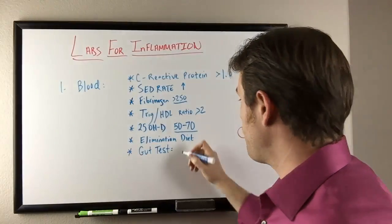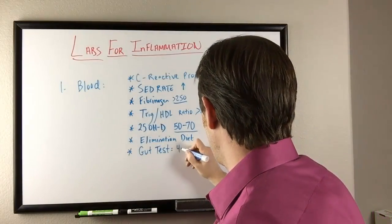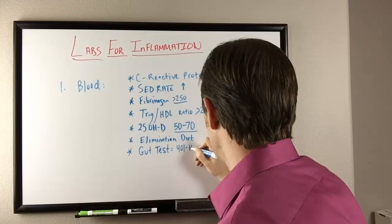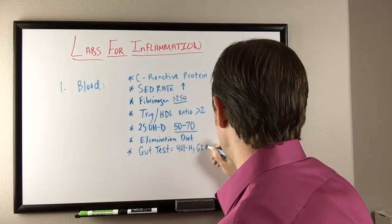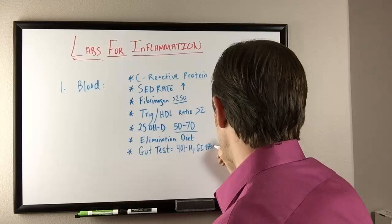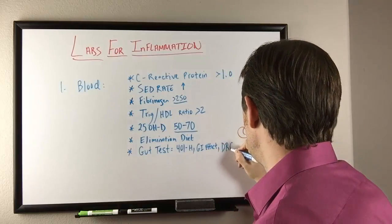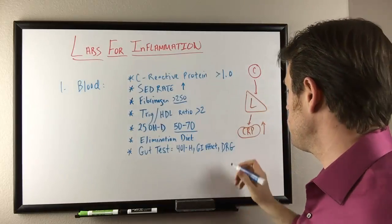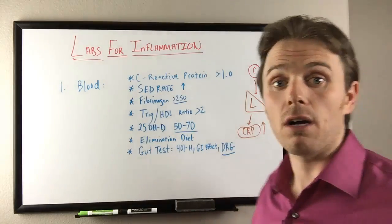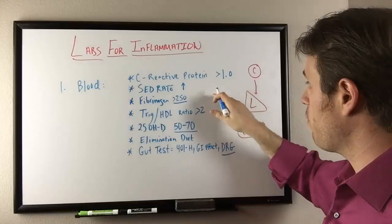I'm going to put my three favorite here. The BioHealth 401H, GI Effects by Genova Metametrics, and DRG Laboratories, which is the new genetic test I've been using the last few months, and it's starting to come out pretty darn good. So we have a couple of different things right here.